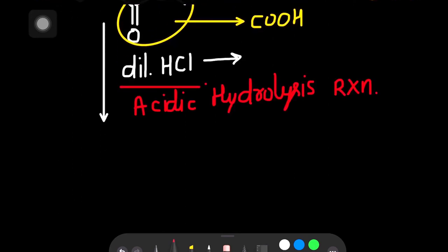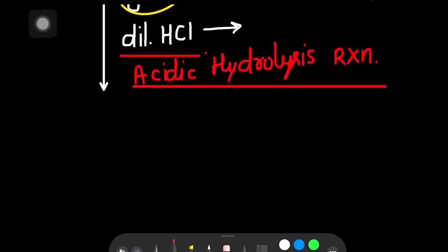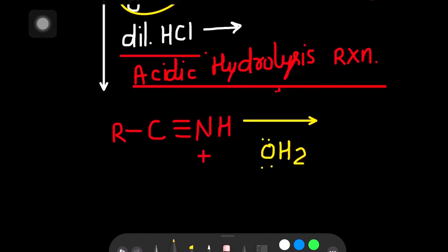When we add diluted HCl in this reaction, acidic hydrolysis takes place. In this reaction, the nitrile group will extract this proton. Now nitrogen bears a positive charge. Water will attack this electrophilic carbon and nitrogen becomes neutral again.